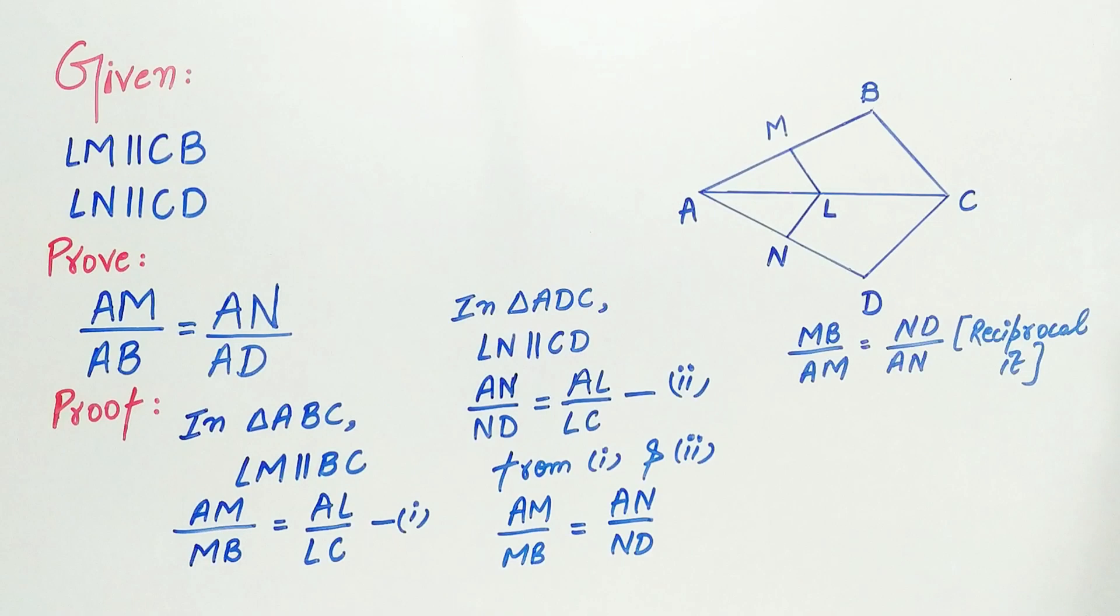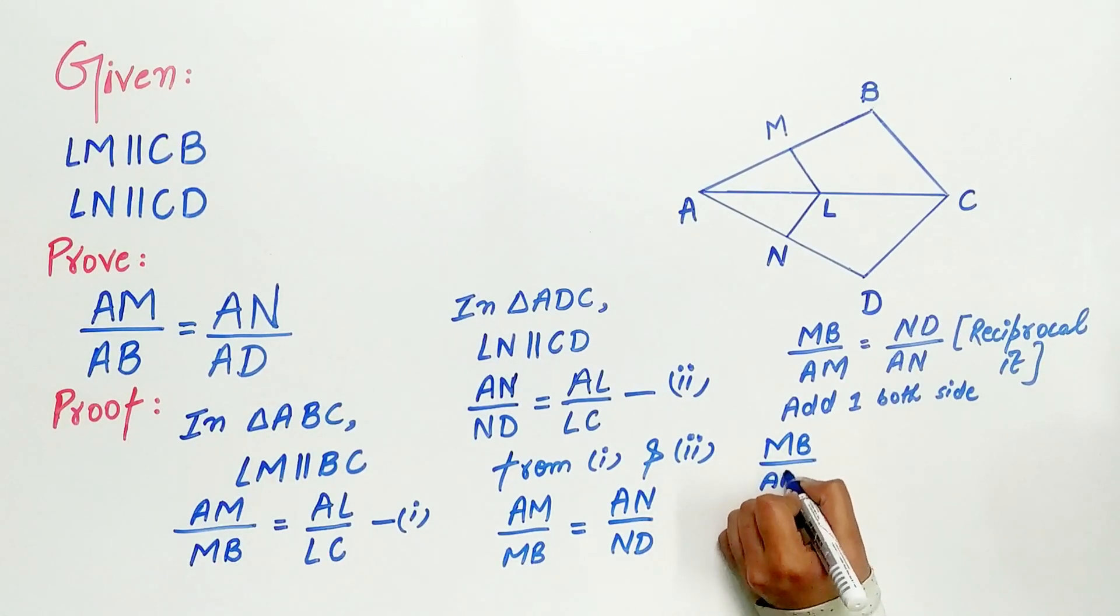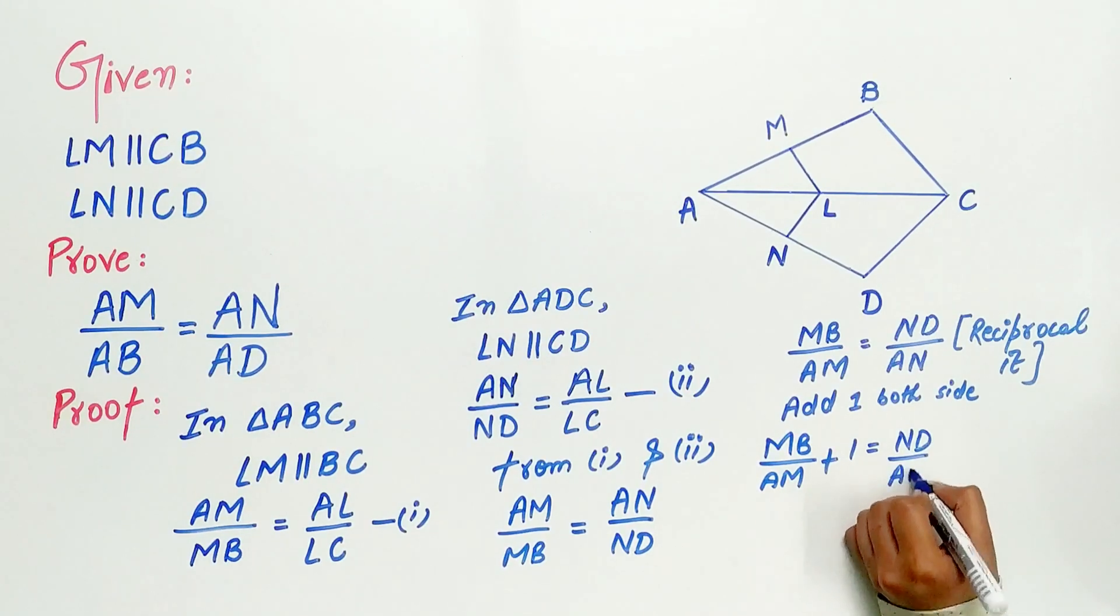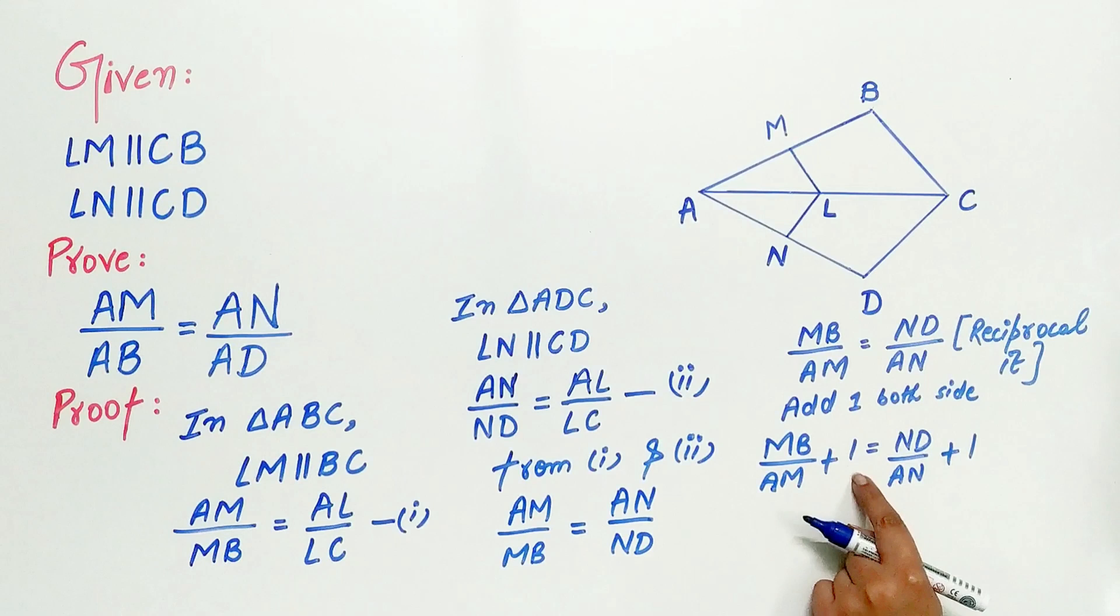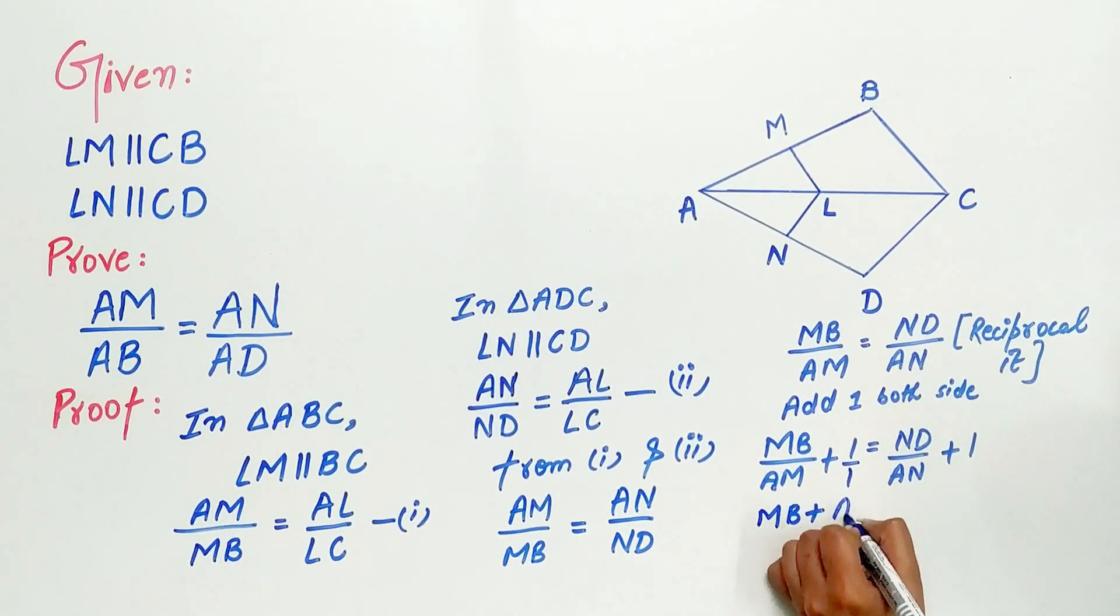The next step is to add one both sides of the equation. MB by AM plus one is equal to ND by AN plus one. Now, the denominator of both the terms is different. Hence, we cannot add it. So, find out the LCM of one and AM to make the denominators same of both the terms. So, MB plus AM by AM.